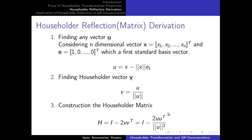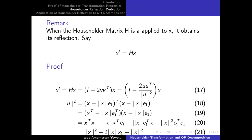We want to understand what makes the Householder matrix a reflector. This remark explains why the Householder transformation matrix is considered a Householder reflector or reflection matrix. When a Householder matrix H is applied to a vector x, it obtains the reflection of x. To prove this, we rewrite our expression: H can be written in terms of I minus 2 times V V transpose, and we multiply by x, calling it equation 17.